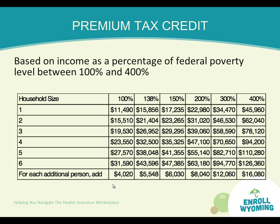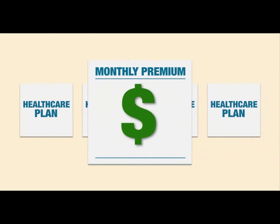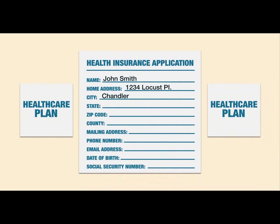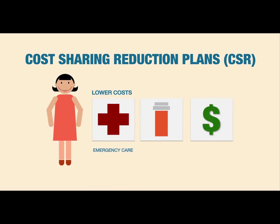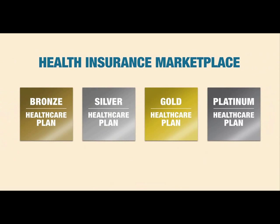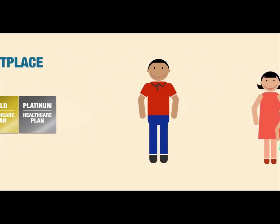When you use the health insurance marketplace to shop, you may be able to lower costs through cost-sharing reduction (CSR) plans. CSR plans offer lower costs for getting care — things like emergency room visits and prescription drugs — and you'll generally pay less each month. You'll be shown all plans you're eligible for, including CSR plans. CSR plans are all silver plans, but you'll notice that their costs are about what you'd pay for a bronze plan.